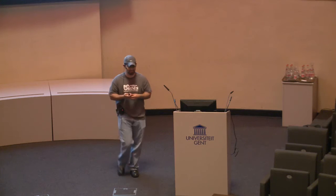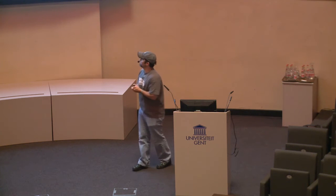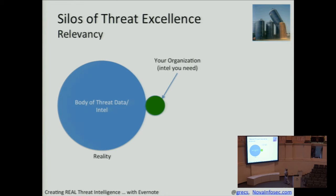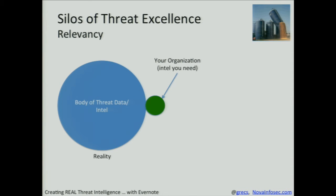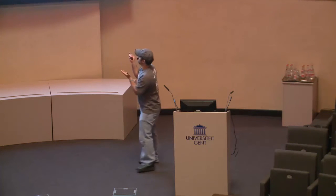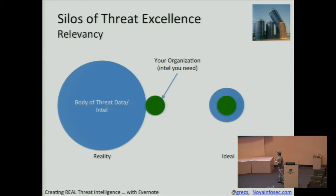So how is this relevant? Just a little analogy: this circle represents the scope or body of threat data — slash intel, whatever you want to call it. This is your organization. Maybe there's a small overlap. So you're buying this massive amount of data, but most of it is irrelevant. Most of it is setting off your IDS sensors, IPS, firewalls, proxies for stuff that isn't even relevant to you. Ideally you would want something where the threat intel you buy is mostly relevant to you.